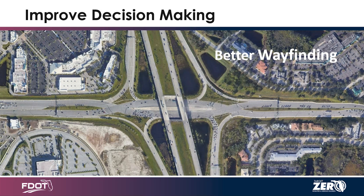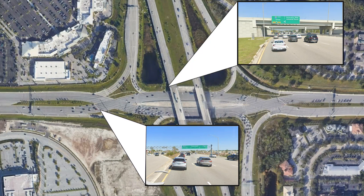Looking at wayfinding — this is a diverging diamond on I-75 and University in the Sarasota area. There was a lot of concern when it first came out. Nathan Benderson Park is on the bottom left of your screen; there's a lot going on. There was concern about putting people on the wrong side of the road. But when you actually get down to street level and start driving it, the signage and pavement markings make it very intuitive. You don't even realize what's going on. The decision making is either taken away or it's very simple.